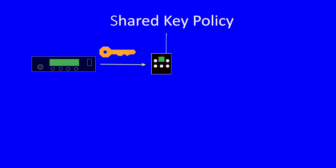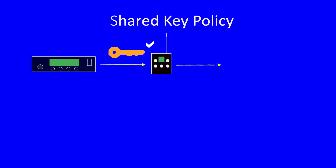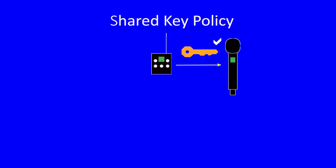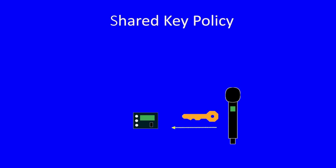The shared key policy is useful when you need multiple transmitters and receivers all connected but require more security than the universal type — for instance, in sports coverage. Once a shared key is generated by the DSQD and transferred to a transmitter, the key is then available to be shared by that transmitter with other transmitters and receivers via their infrared ports, making this a flexible tool.